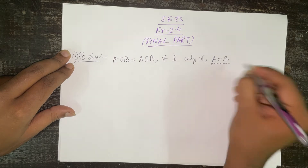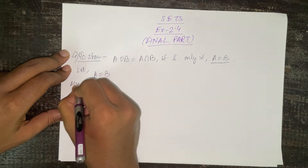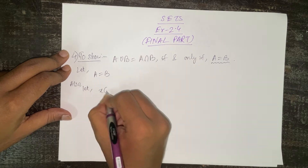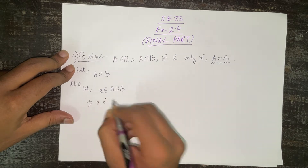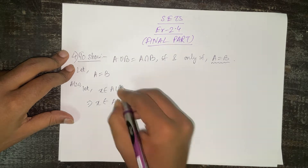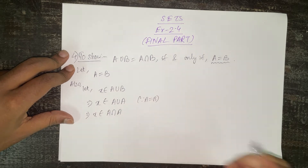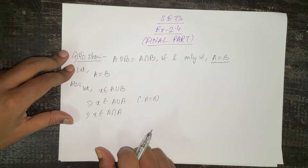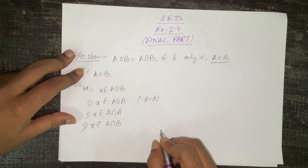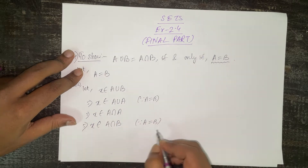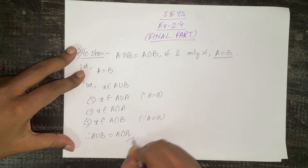First, let us consider A = B as our condition. We will try to prove that A∪B = A∩B. Let x ∈ A∪B. Since A = B, we can write x ∈ A∪A. Now A∪A and A∩A are the same thing, so we can also write x ∈ A∩A, which means x ∈ A∩B since A = B. Therefore A∪B = A∩B.